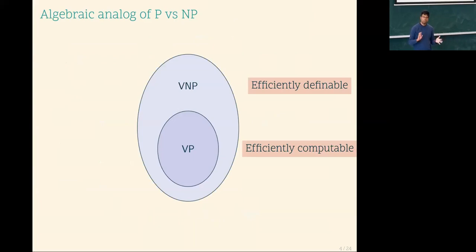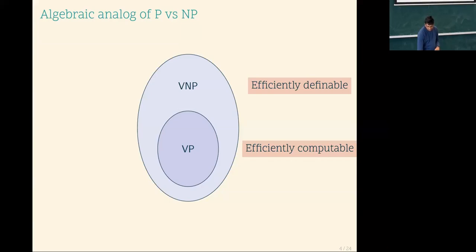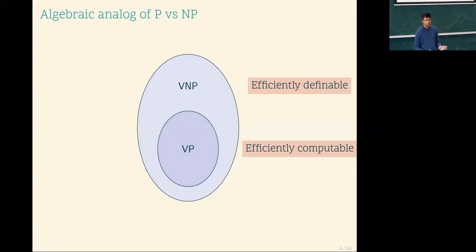Analogous to P versus NP, there is this notion of algebraic P versus algebraic NP, where the V comes from Valiant — Leslie Valiant was at least the first person to formally study algebraic complexity classes. VP is a class of polynomials which are efficiently computable, meaning polynomial-sized arithmetic circuits. There's also a restriction that you're only considering polynomials with bounded degree.